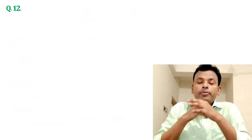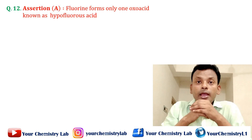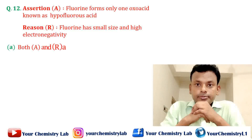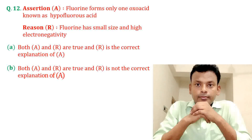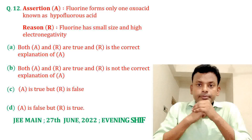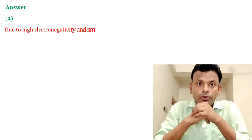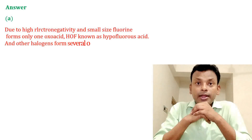Question number twelve: assertion — fluorine forms only one oxoacid known as hypofluorous acid. Reason — fluorine has small size and high electronegativity. Options A, B, C, and D are given. Answer: option A is correct. Due to high electronegativity and small size, fluorine forms only one oxoacid, HOF, known as hypofluorous acid, whereas other halogens form several oxoacids.